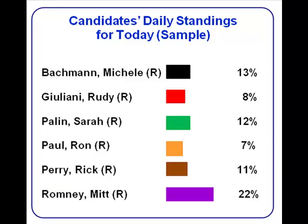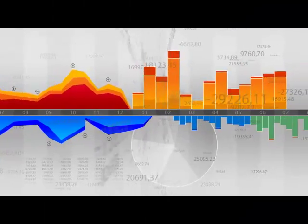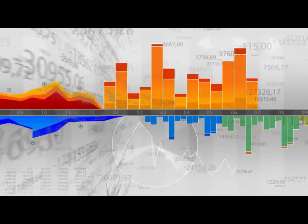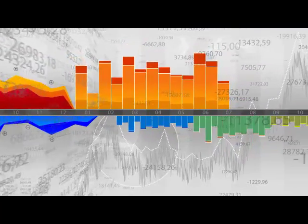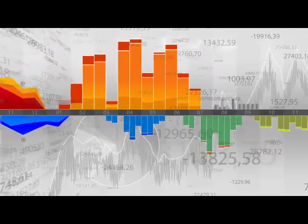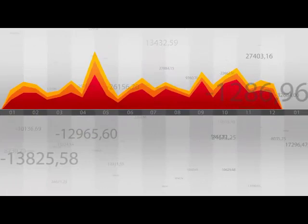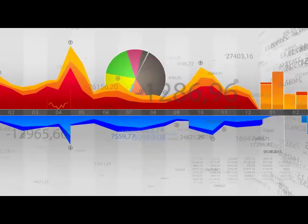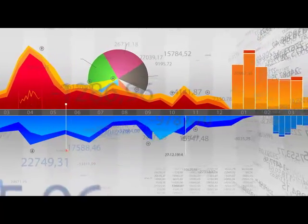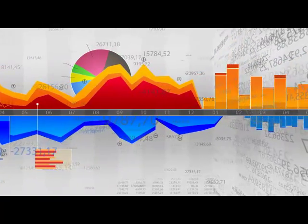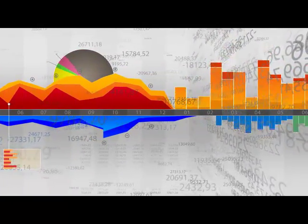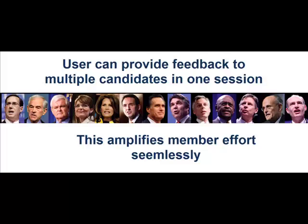3. Candidates and organizations benefit from real-time and tracked data searchable by candidate name, keyword, phrase, and issue as national, state, county, city, and zip plus four criteria to perform analytics. This provides more nuanced, granular feedback from micro-group tracking and trending by your organization. Since the E-Voice user can provide feedback to multiple candidates in one session, this amplifies member efforts seamlessly.